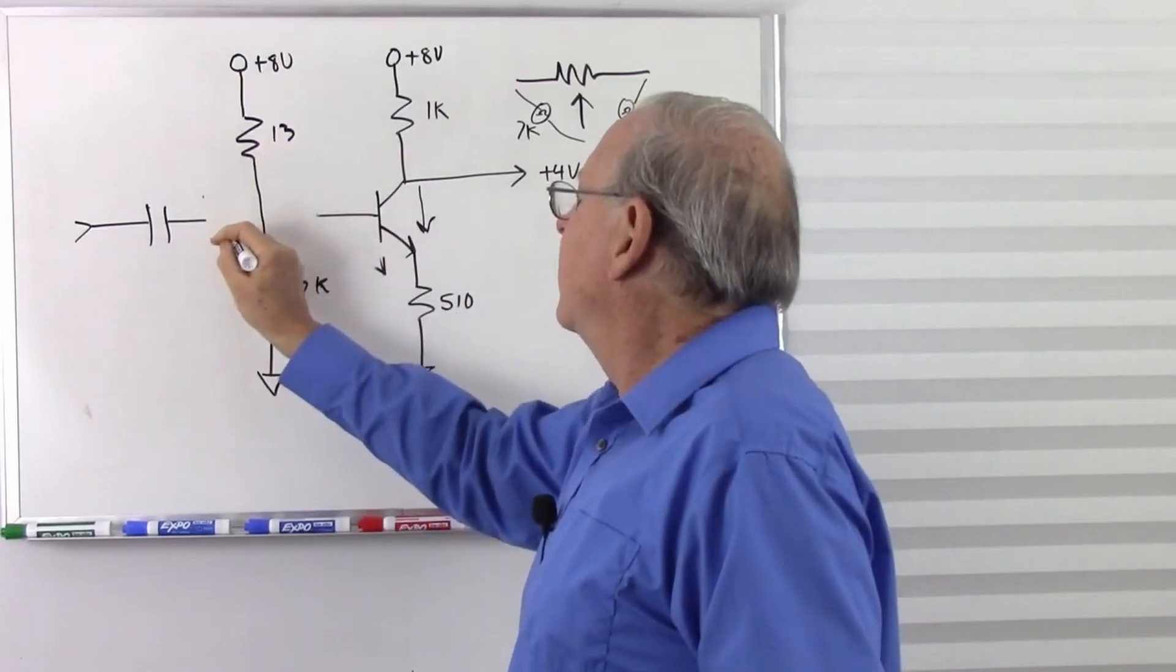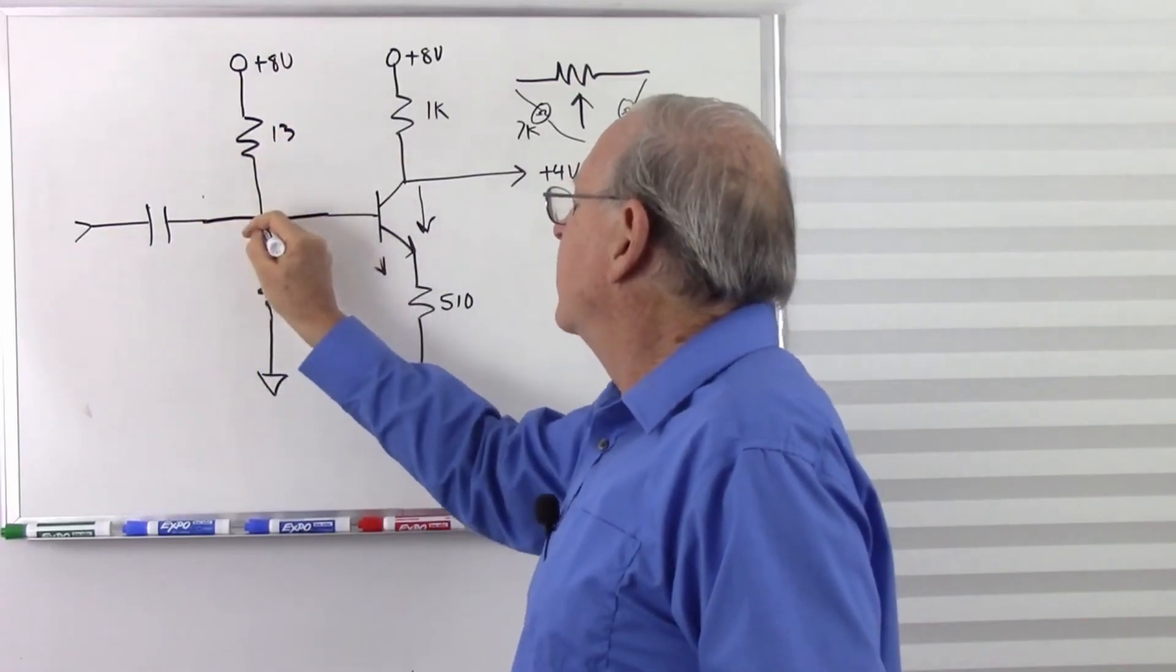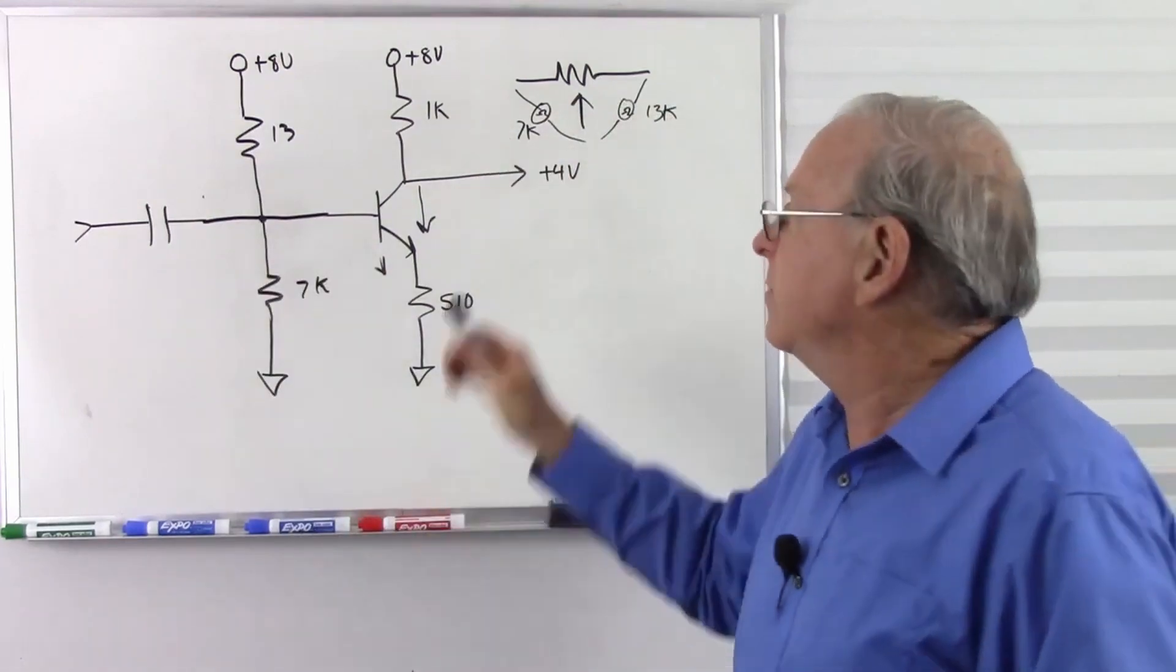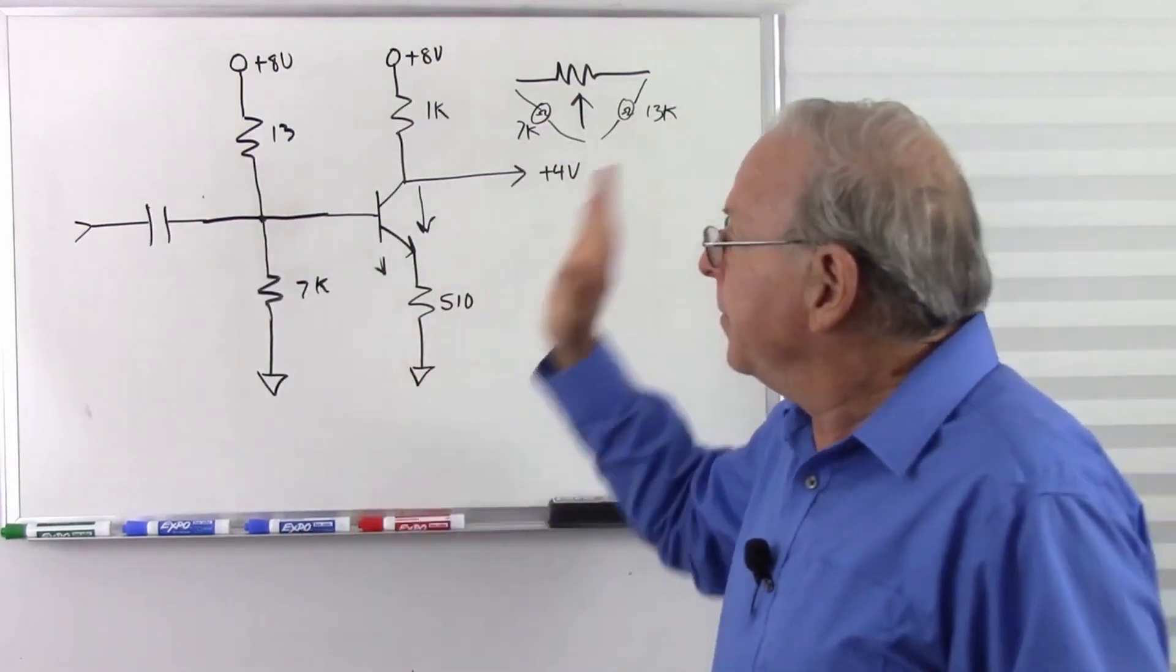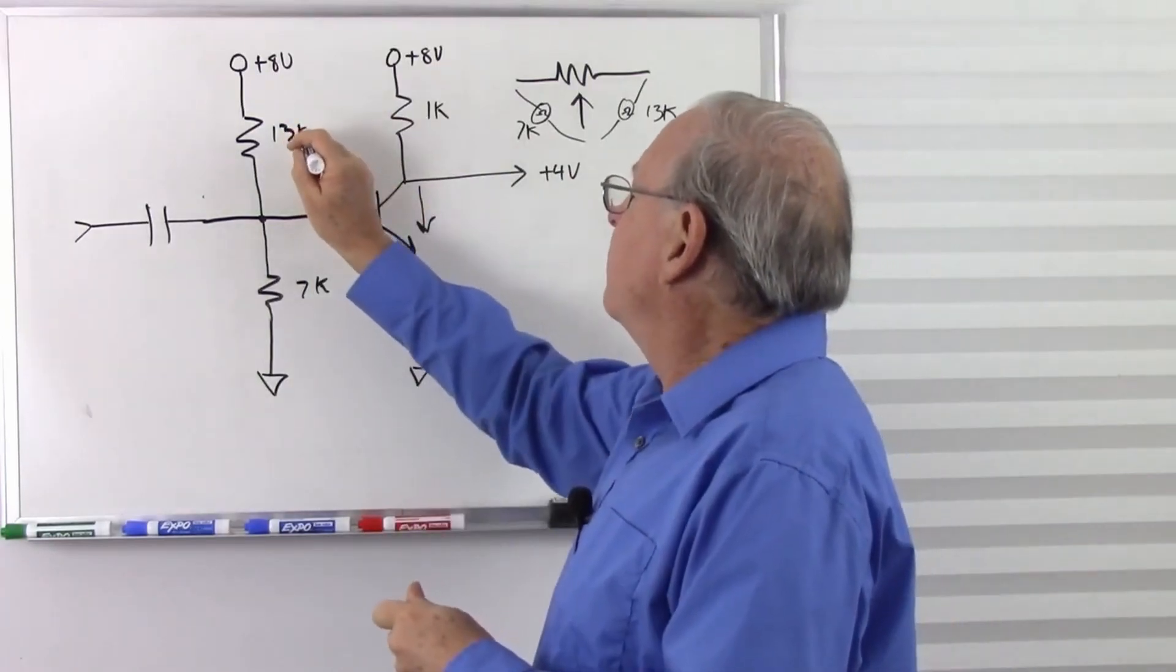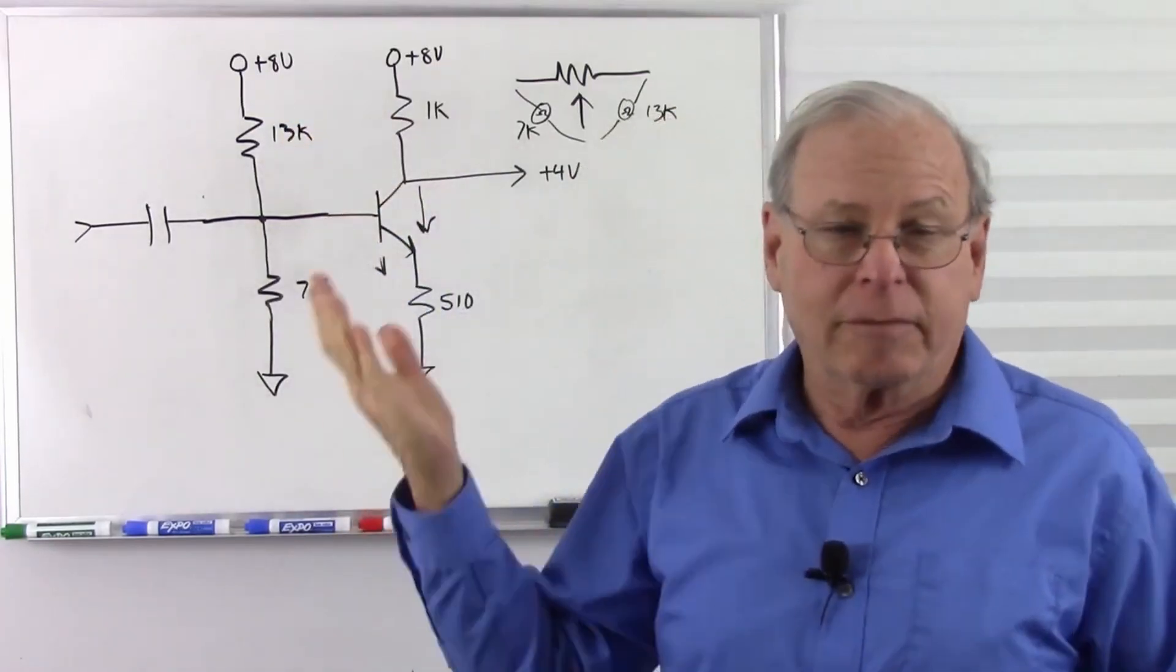7k, 13k, and now we have the complete circuit there with the input coupling capacitor, which I forgot the output coupling capacitor but that's not important right now anyway. So that's where I came up with those numbers, exactly as you asked. I measured them.